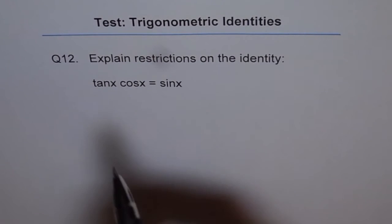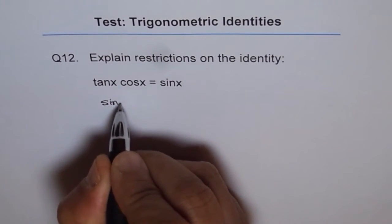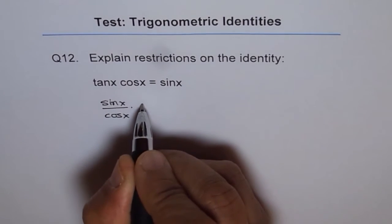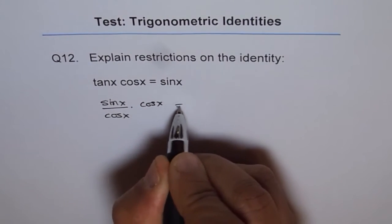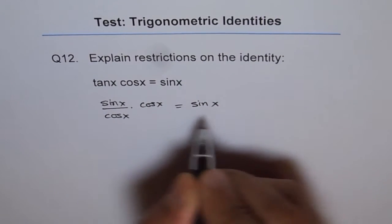Now, tan x is written as sin x over cos x, right? Times cos x will give us, they cancel out, sin x. So it is definitely an identity.